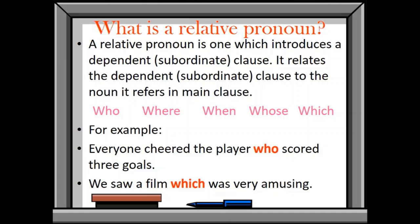A relative pronoun is one which introduces a dependent or subordinate clause. Dependent clause means these words: who, where, when, whose and which. When we are going to use them in sentences, they are going to introduce the dependent clause. Dependent clause means which cannot stand alone. It relates the dependent clause to the noun it refers in the main clause. In simple words, it will introduce the dependent clause that will be telling us more about the noun which is present in the main clause.